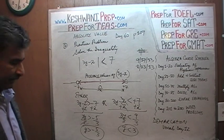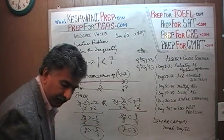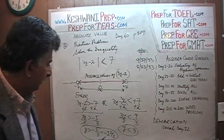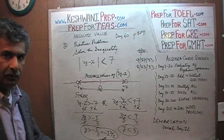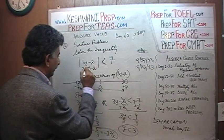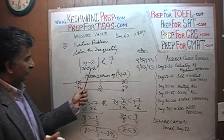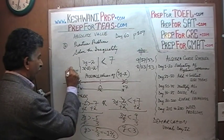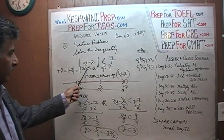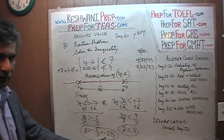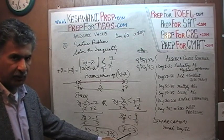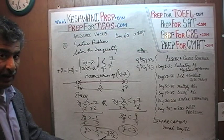Similarly, y has to be more than negative five-thirds. Negative five-thirds is the same as negative 1 and two-thirds. Can you think of a number less than −1⅔? How about −2? I'll show you that −2 doesn't work: 3 × (−2) = −6, and −6 − 2 = −8. So we get |−8| = 8, and positive 8 is not less than 7. Negative 2 does not work — the lowest value y can assume is −1⅔ and the highest is just under 3.